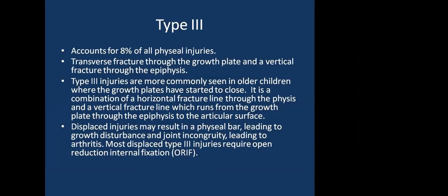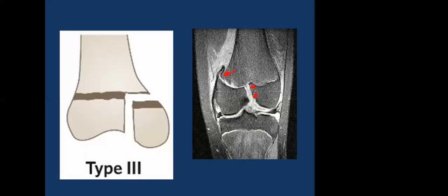Type 3 accounts for 8% of all physeal injuries. It involves a transverse fracture through the growth plate and a vertical fracture through the epiphysis. More commonly seen in older children where the growth plates have started to close. It combines a horizontal fracture through the growth plate and a vertical line from the growth plate through the epiphysis to the articular surface. Displaced injuries may result in a physeal bar leading to growth disturbance, joint incongruity, and arthritis. Most displaced type 3 fractures require open reduction and internal fixation.